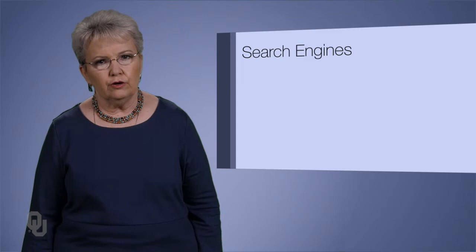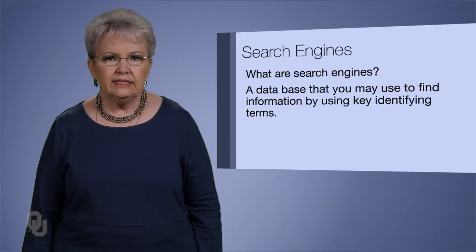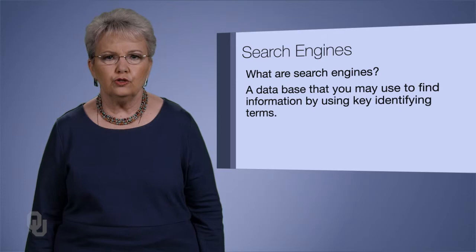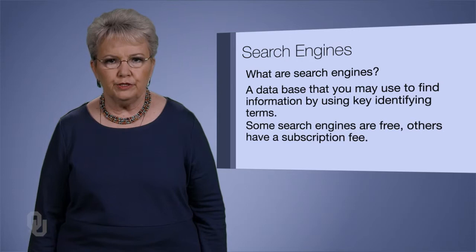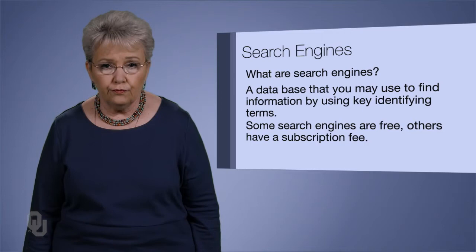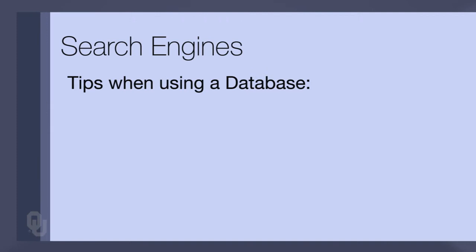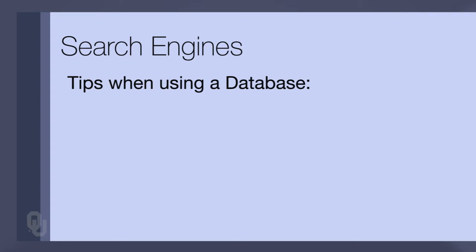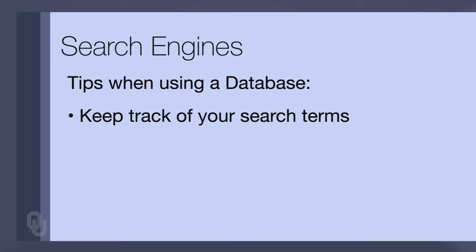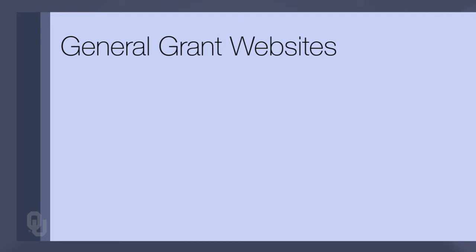There are a whole bunch of search engines available. A search engine is a database that searches with your key terms, and you may use one to search for grants. Some are free; many have a subscription fee, and your school system may subscribe to a fee-based one. Some tips for using a database such as the foundation centers at libraries: keep track of your search terms by jotting them down so you can find the grant resource again, or use their suggested key terms rather than necessarily the words you would pick yourself.